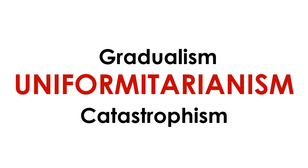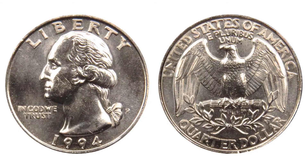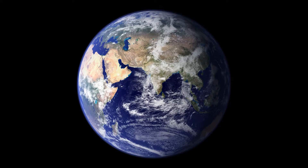At first glance, gradualism and catastrophism seem diametrically opposed, but they are simply extreme opposite views of how our planet has come to be. They are two sides of the same coin. The Earth today is a reflection of slow, continuous processes, as well as short-lived events that seem catastrophic in comparison.